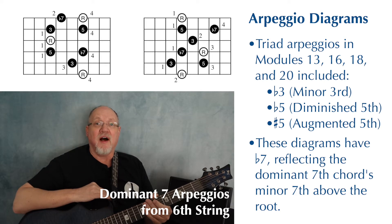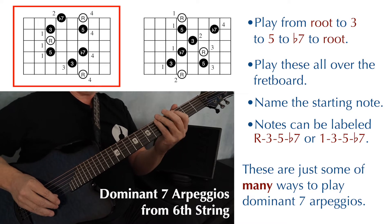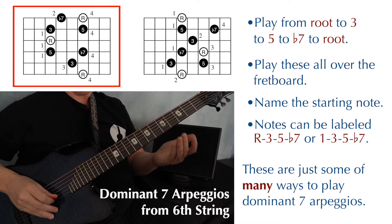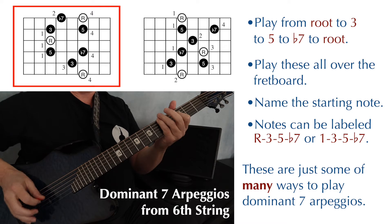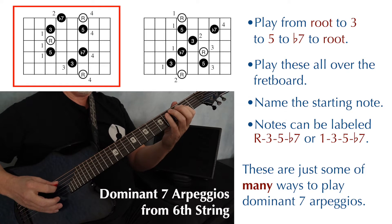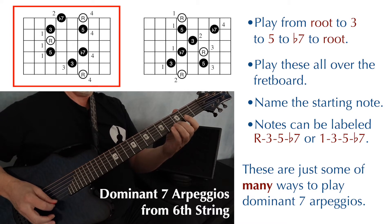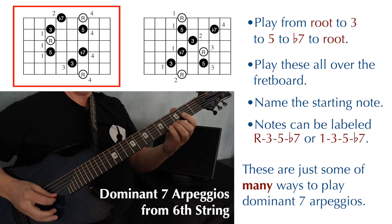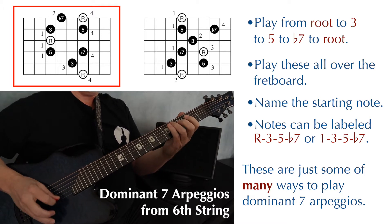I'm gonna start off showing you some arpeggios you can play starting on the sixth string. I'm gonna play all the arpeggios in this lesson starting on the fifth fret, but you should play these all over the fretboard. Here's the dominant seven arpeggio you can play starting on the sixth string with your fourth finger. This is gonna be an A seven arpeggio because I'm starting on the low A, string six fret five. Fingering for this is four, three, one, four, one, one, four, two, four, and back: two, four, one, one, four, one, three, and four.